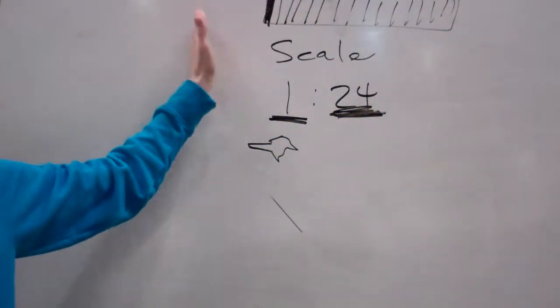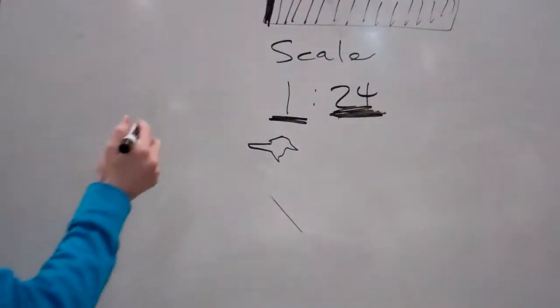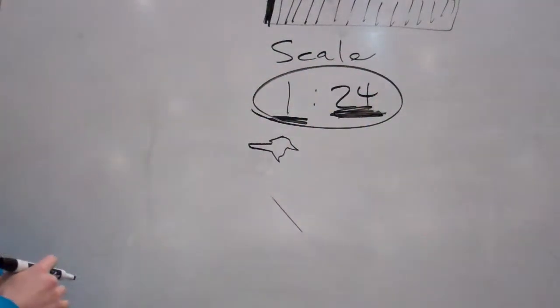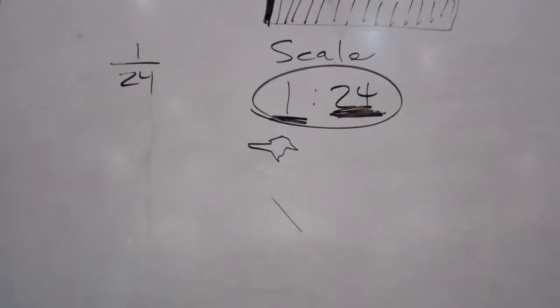That's what it looks like, a scale 1 out of 24. Another way to write this, remember, this is kind of like a ratio, would be 1 over 24, like that.